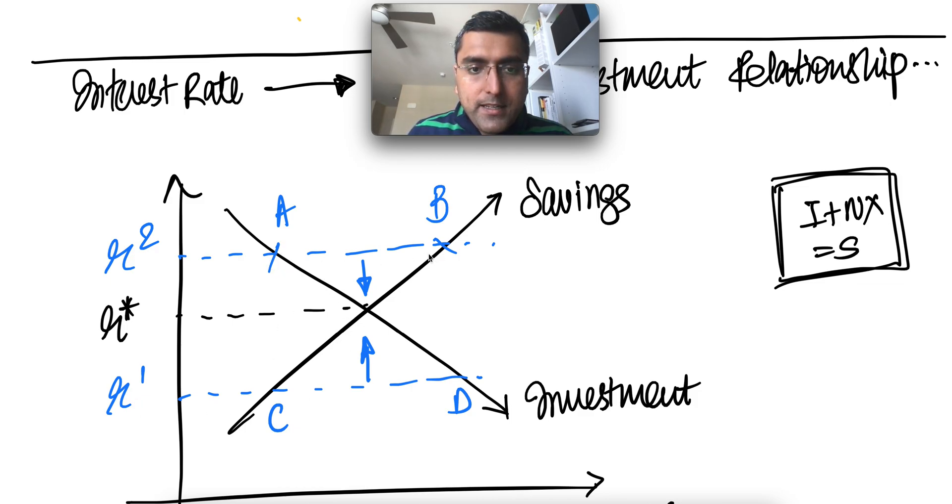So at any point, if we see here where R star is in equilibrium, and at any point here where a desired saving is greater than the desired level of investment, meaning there are more people at point B who are willing to lend you money than people who are willing to take money from you, meaning there is an oversupply of money.